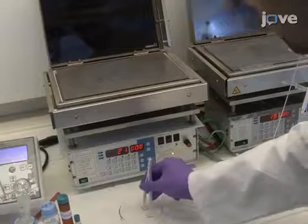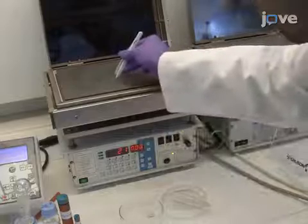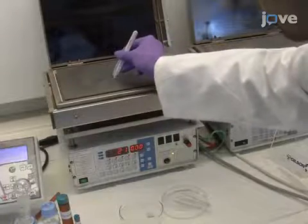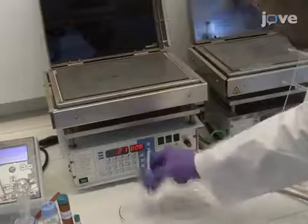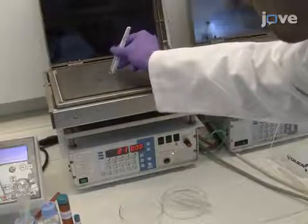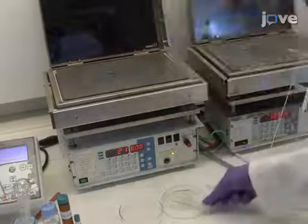To deposit the hole-blocking compact titanium oxide layer, first place the etched and cleaned FTO substrate on a hot plate at 450 degrees Celsius. Immediately cover the contact area with a pre-cut glass slide and allow the substrate to heat to 450 degrees Celsius.